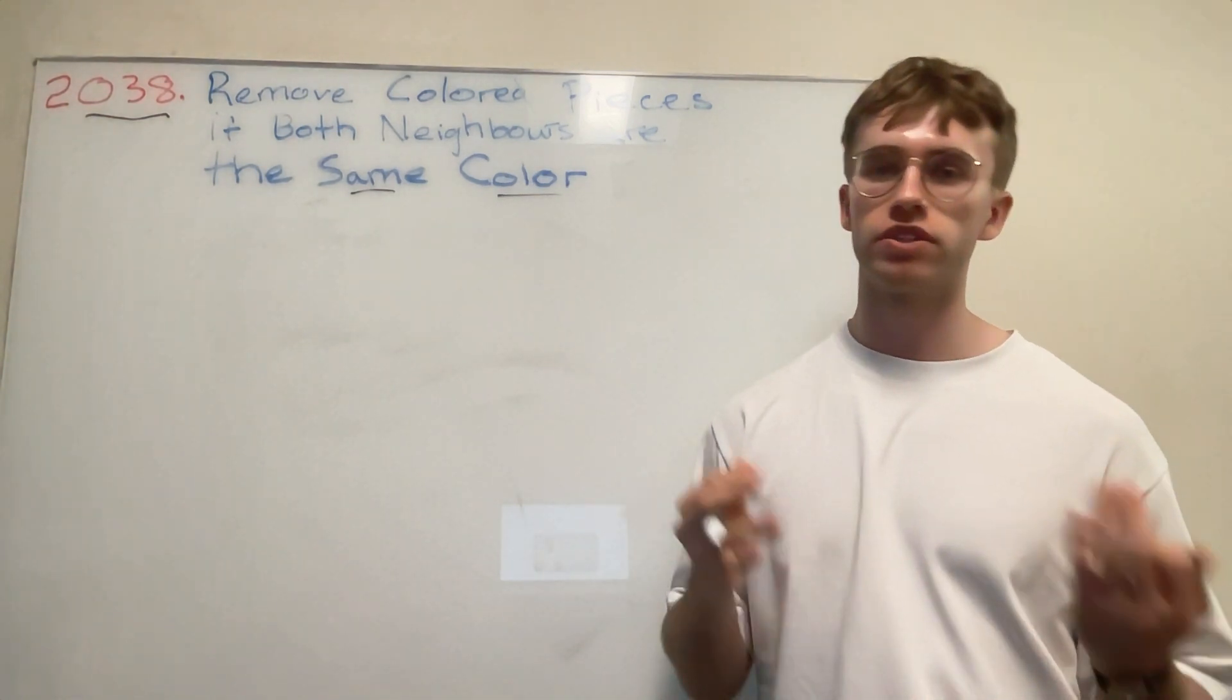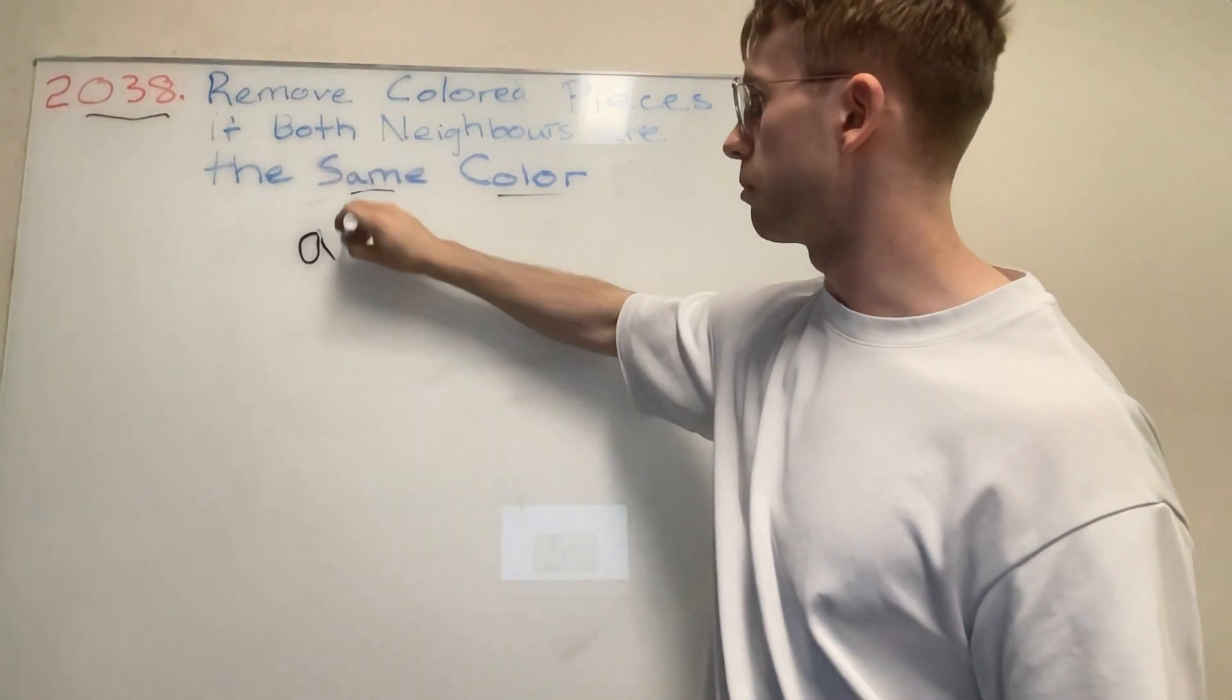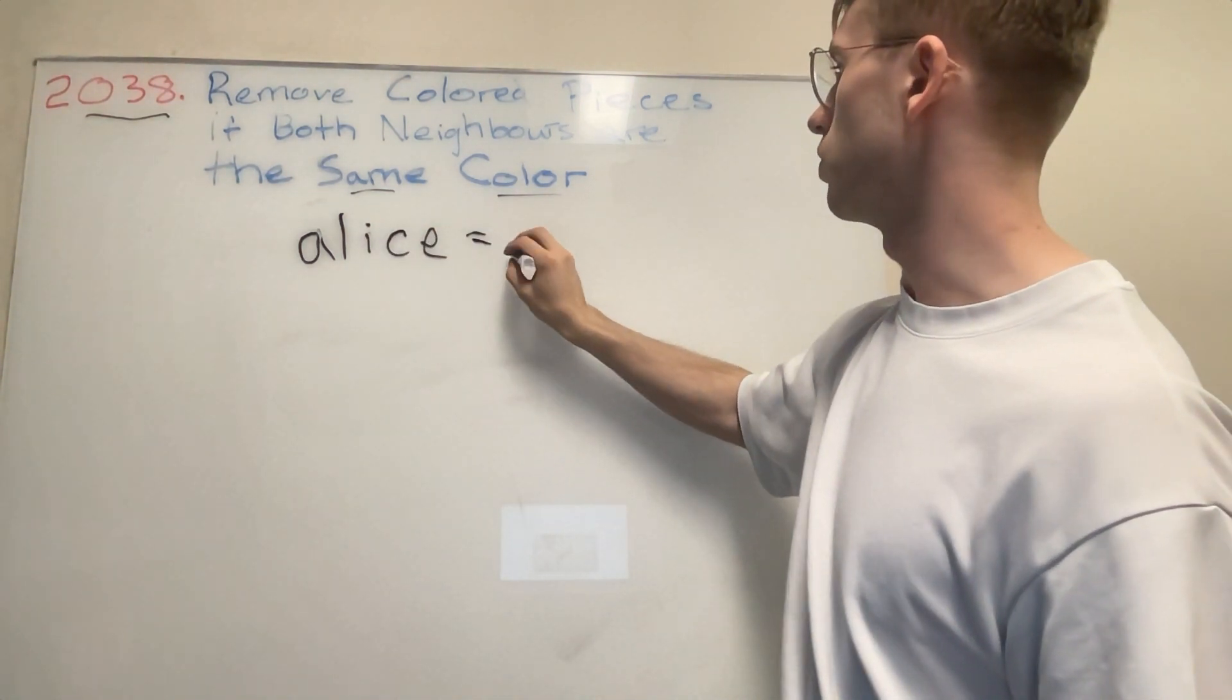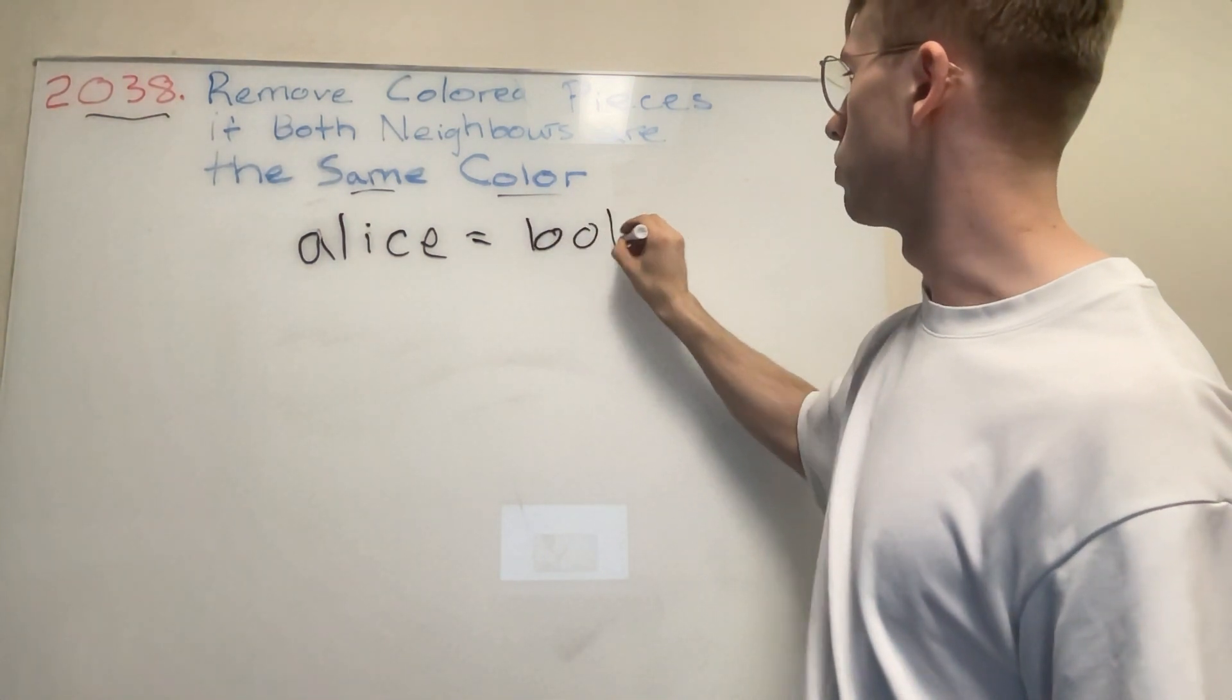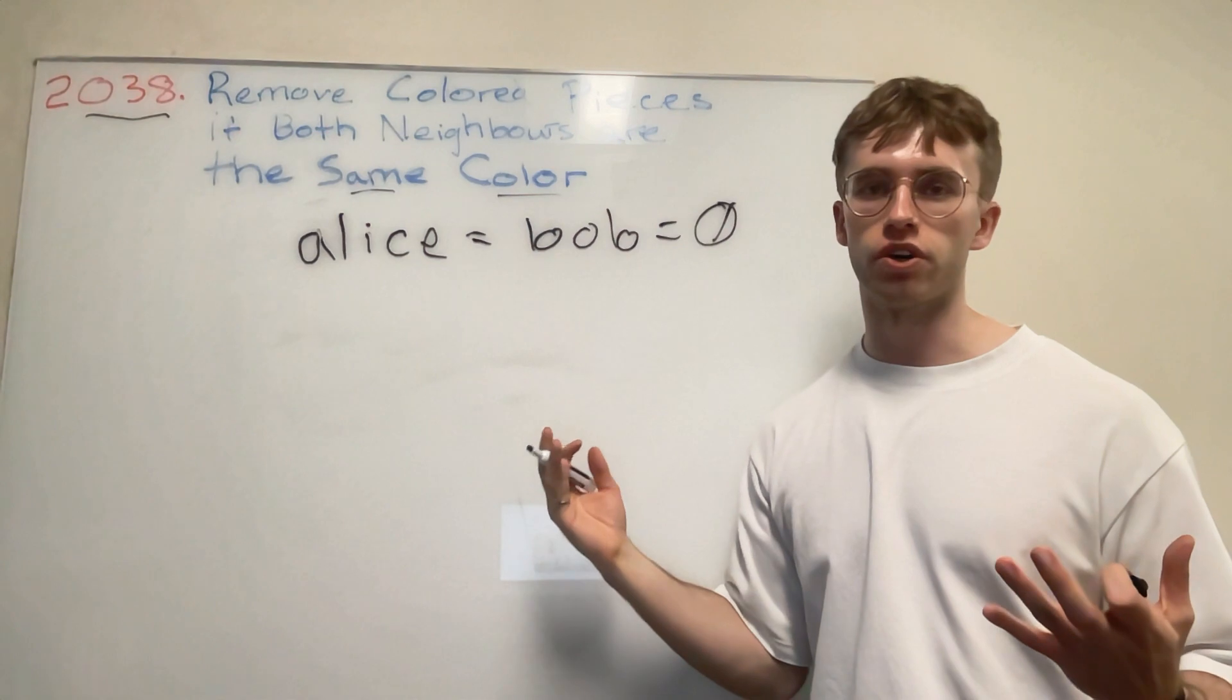So true if Alice wins, false otherwise. To simplify that, to count the points, we'll have something like alice equals bob equals zero. So they're both initially set to zero.